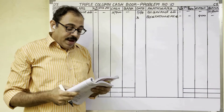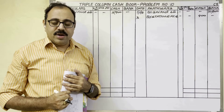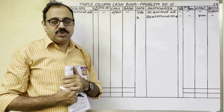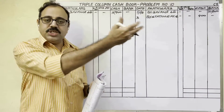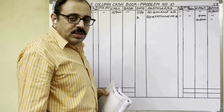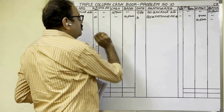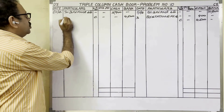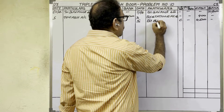Fifth date: deposited into bank 4,500 rupees. When a firm deposits cash into bank or withdraws money from bank, it is a contra entry. For a contra entry, we write on both the debit side and the credit side. Cash is going from the firm, so credit side cash column: 4,500. Bank balance is increasing, so debit side bank column: 4,500. As this is a contra entry, write 'C' in the ledger folio column on both sides. In particulars, where the amount is in the bank column write 'to cash account'; where the amount is in the cash column write 'by bank account.'